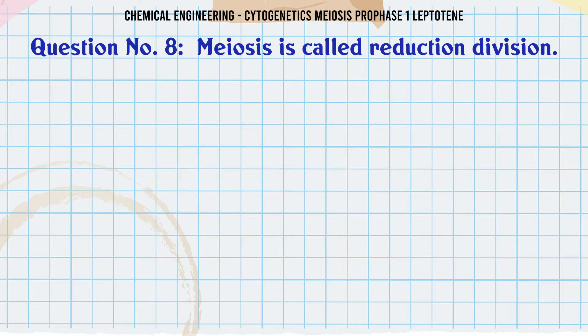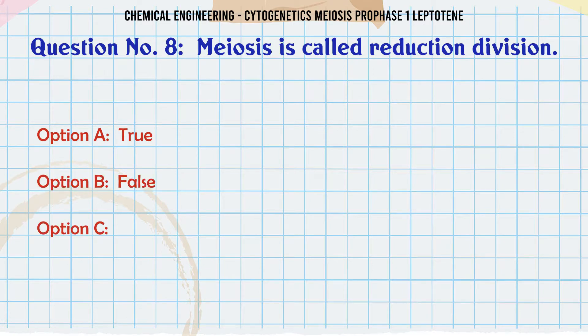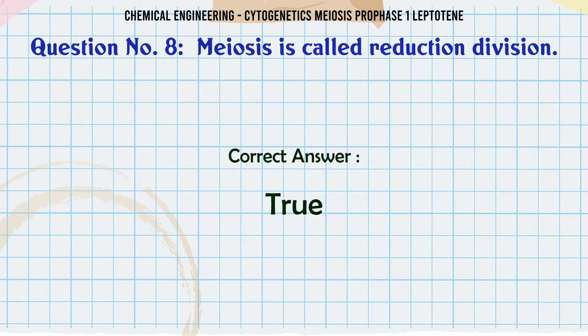Meiosis is called reduction division. A. True. B. False. The correct answer is: True.